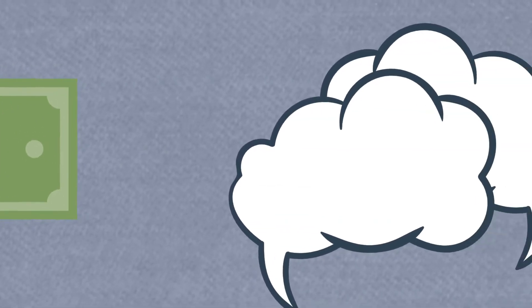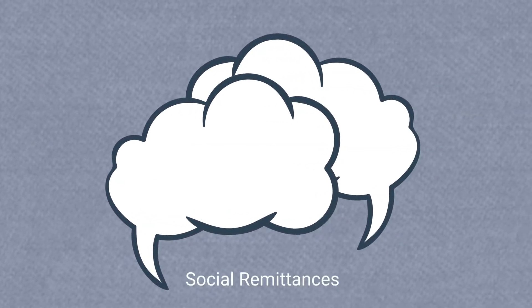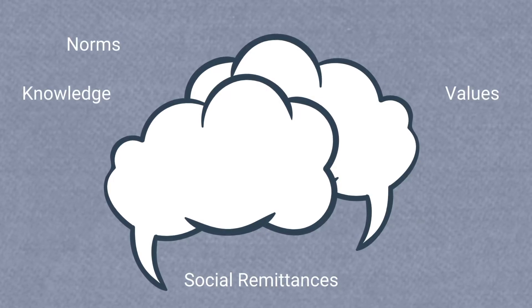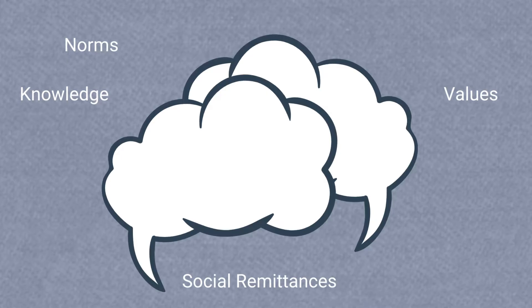Another way effects can be manifested is through social remittances, or the norms, values, and knowledge transfer sent back to families, friends, and communities of origin.